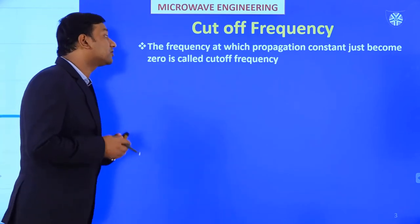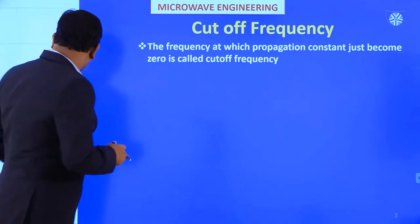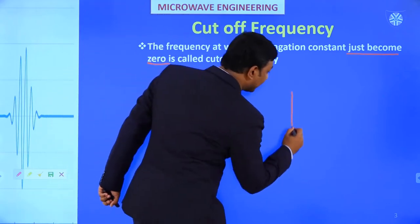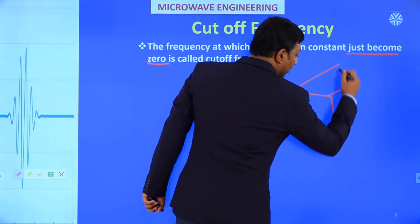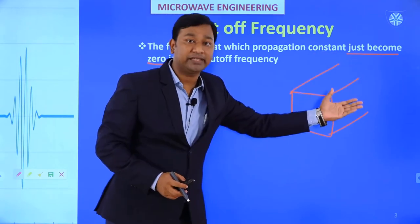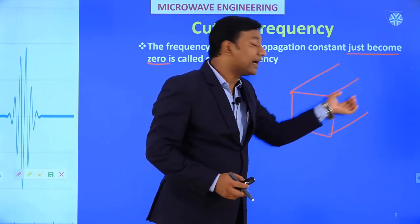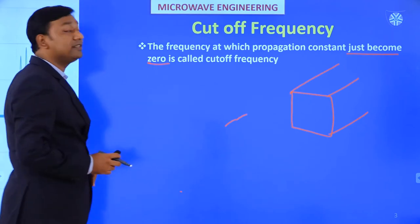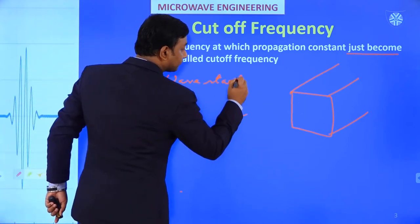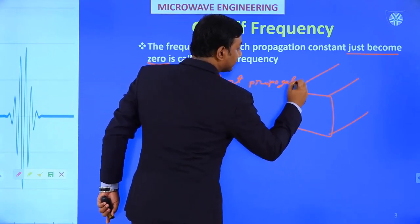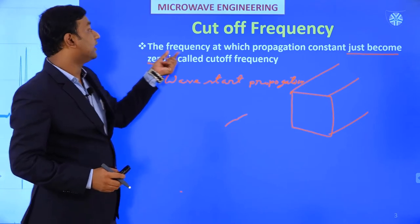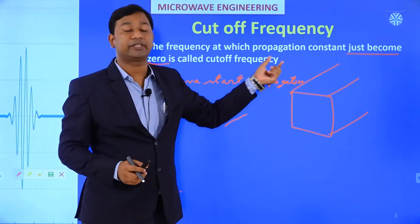First, cutoff frequency — we can say the frequency at which the propagation constant just becomes zero is called cutoff frequency. In the waveguide, either in transverse electric or transverse magnetic mode, after that frequency the wave operation will start; before that frequency the wave is not propagated along the waveguide, it is attenuated. So cutoff frequency is where wave propagation starts.